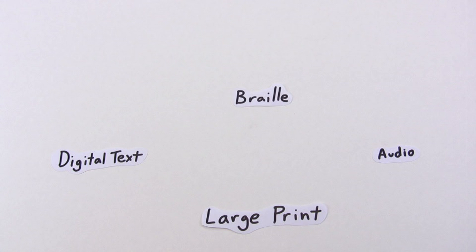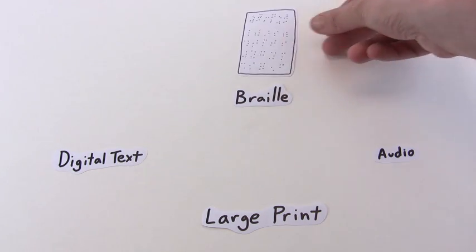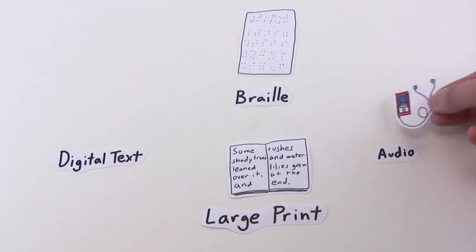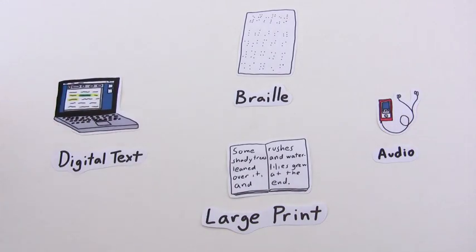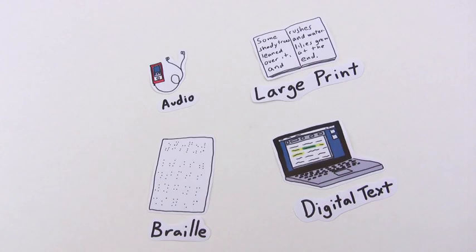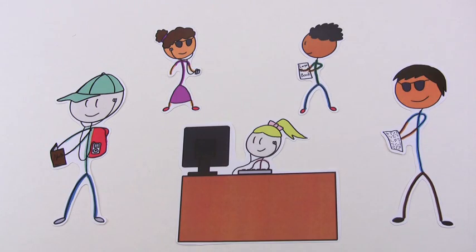There are four different specialized formats available: Braille, large print, audio, and digital text. The right formats are chosen based on how a student will access the information contained in printed materials.